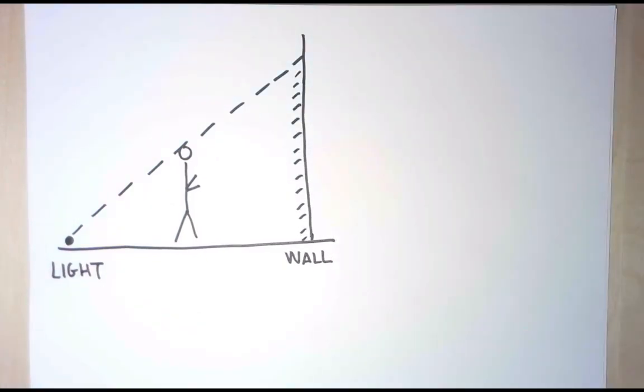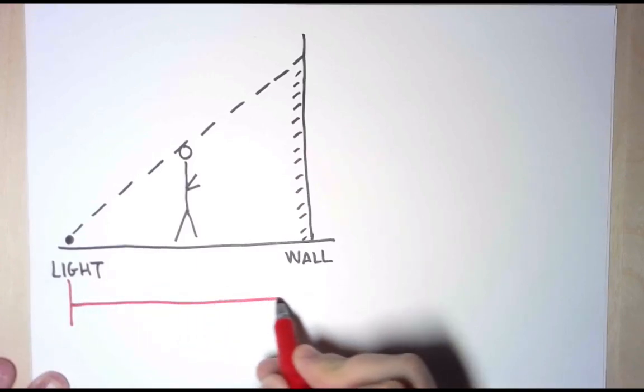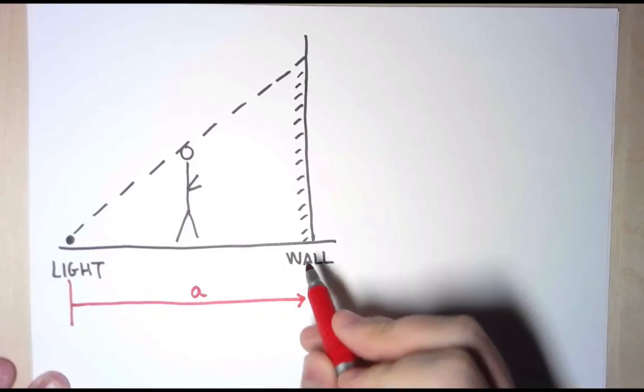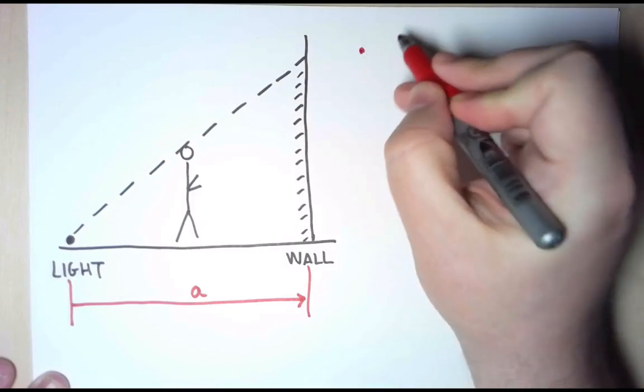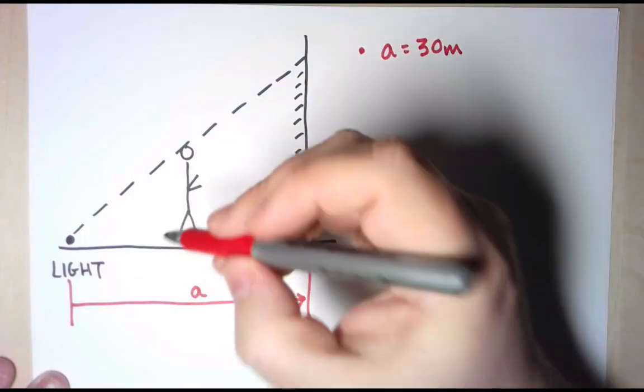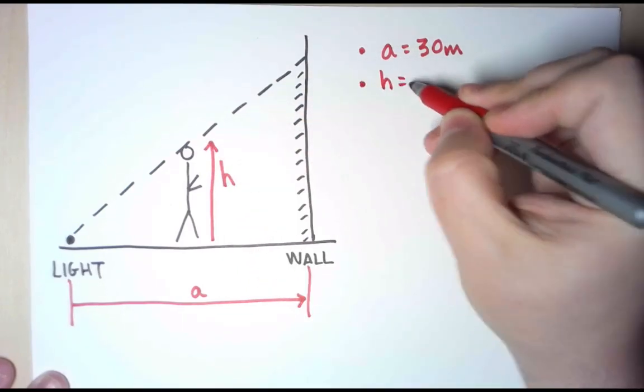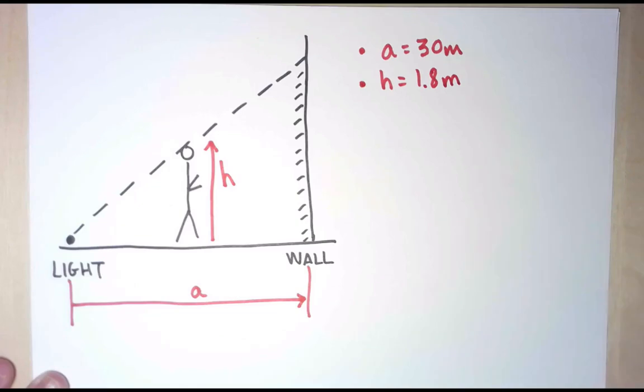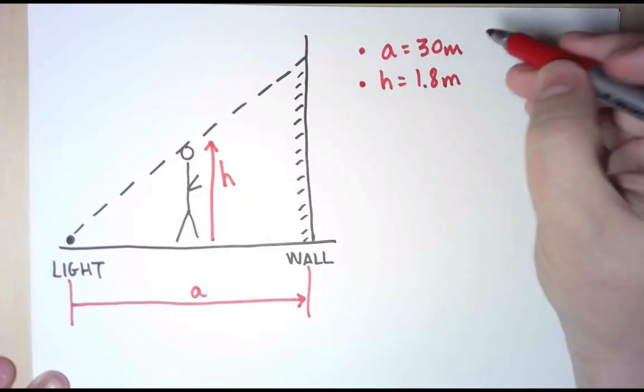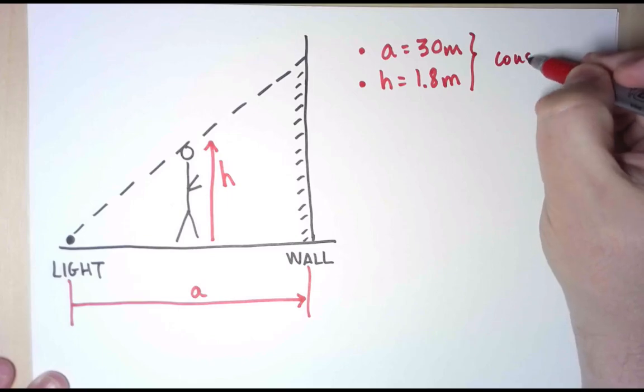Now let's take the data from the statement of the problem and add it to the picture. First, we know that the distance between the light and the wall is 30 meters. I'm going to call this A, and we know that A is 30 meters. And we also know the height of the prisoner. I'm going to call it H. H is 1.8 meters. And I know that these two quantities are constant. They don't depend on time.